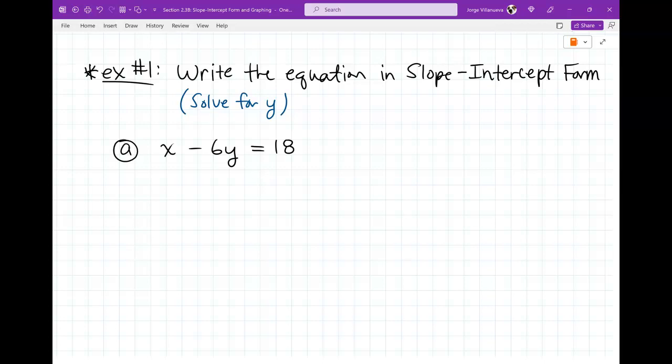So we're going to write the equation in slope-intercept form. Remember, slope-intercept form is y equals mx plus b. Y equals, that means that they solve for y. So I put that right here in blue, under the instructions. Write the equation in slope-intercept form. In other words, solve for y. So we're going to do two of these. First one, x minus 6y equals 18.